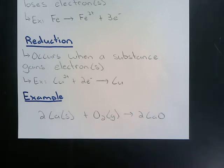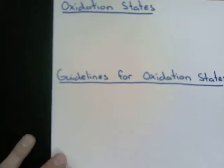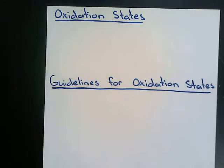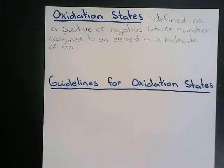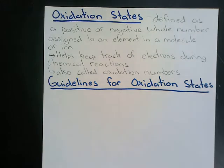Now we can talk about oxidation states. Oxidation states are defined as a positive or negative whole number assigned to an element in a molecule or ion. We assign oxidation states to help keep track of electrons during chemical reactions. These oxidation states can also be referred to as oxidation numbers. We have some guidelines to help us determine oxidation states of certain elements.